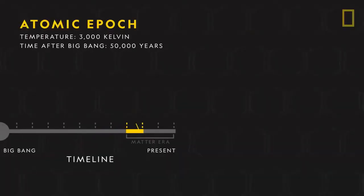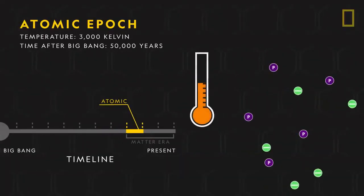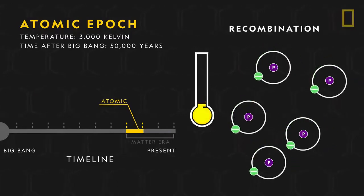The first was the atomic epoch. In this stage, the universe's temperature cooled down enough for electrons to attach to nuclei for the first time. Called recombination, this process helped create the universe's second element, hydrogen.